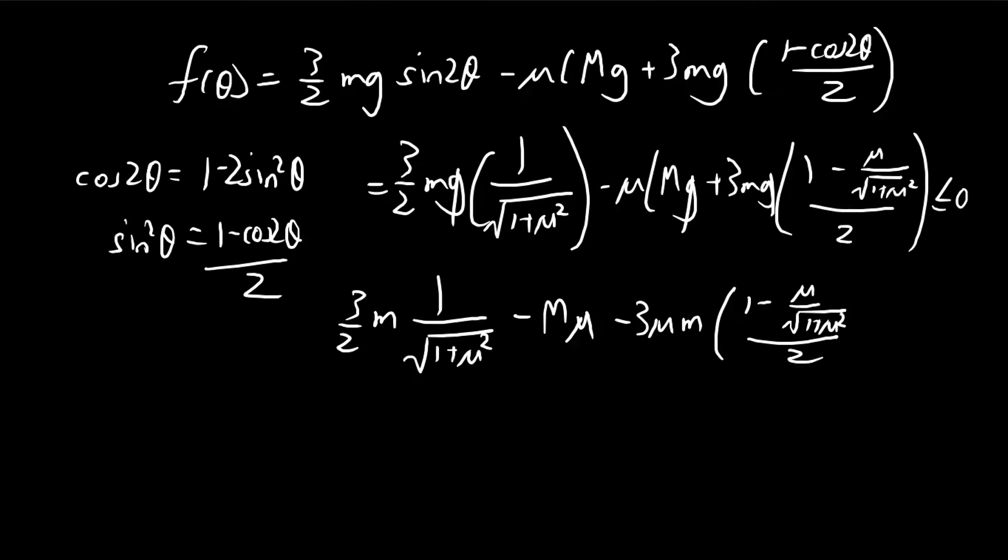So let me just write this out so that I can follow what's going on. So you can see that we can actually combine this term with this term. So there's a 3 over 2, so 3 over 2m.